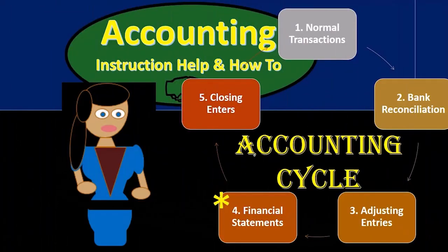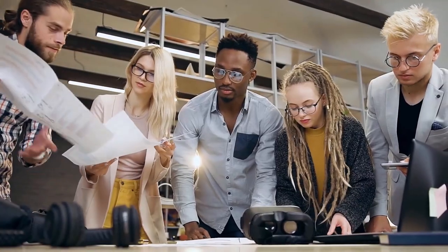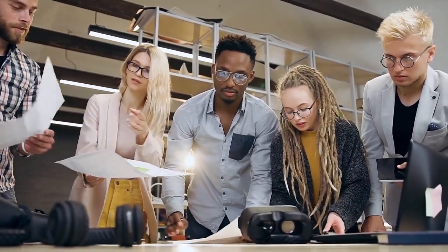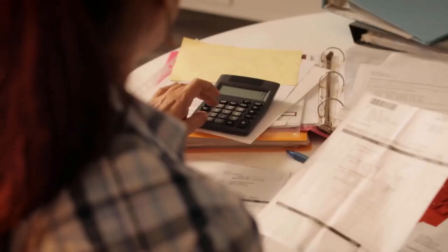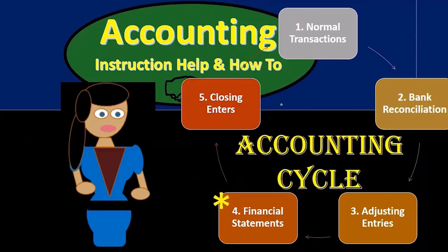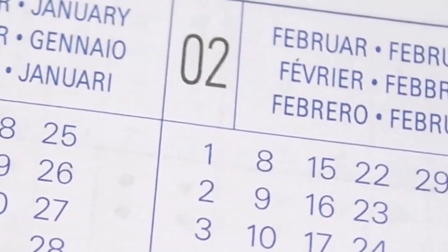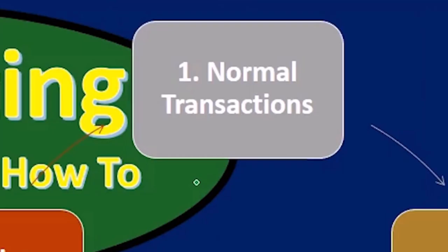The first step we're going to consider is normal transactions — the things that the accounting department is doing: entering invoices, entering bills, dealing with payroll, all the stuff we generally think of in terms of the accounting department. We're going to group all of that into step one. In terms of timing, step one is far greater than any of the other steps because that's what's happening throughout the entire month. Everything else is basically happening at the end of the month.